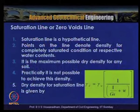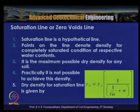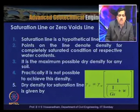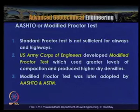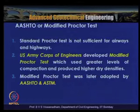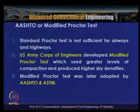The saturation line is a hypothetical line — points on it represent maximum possible dry density for completely saturated conditions at respective water contents, and this density is not practically achievable. The Modified Proctor test was developed by the US Army Corps of Engineers to achieve higher densities, and was later adopted by AASHTO and ASTM.